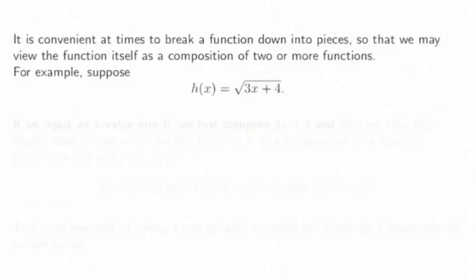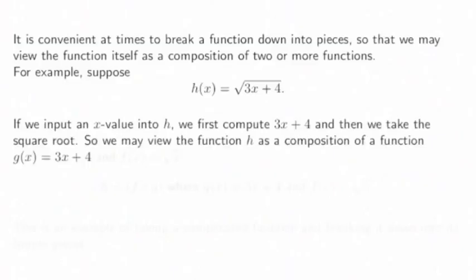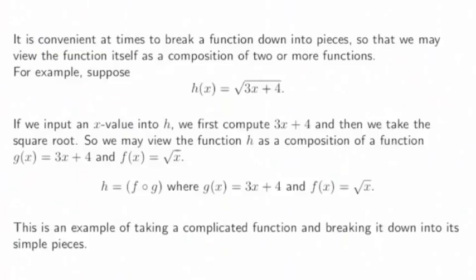For example, let's look at h of x equals the square root of 3x plus 4. If we input an x value into the function h, we first compute 3x plus 4 and then we take the square root. So we could view h as the composition of g of x equals 3x plus 4 and f of x, the square root function. In this case, h is f composed with g. This is an example of taking a complicated function and breaking it down into its simple pieces.